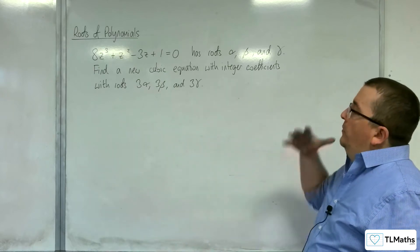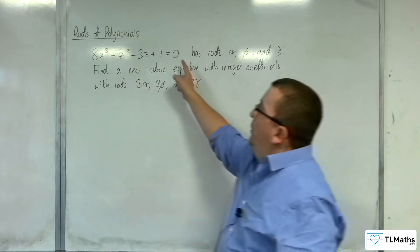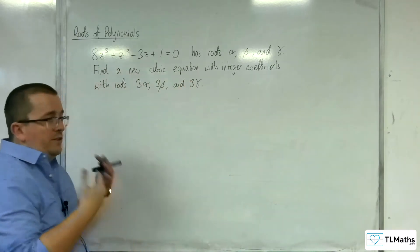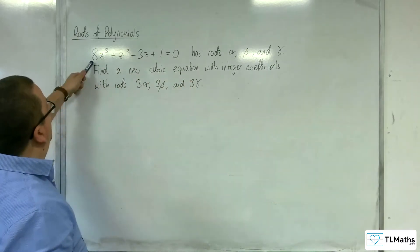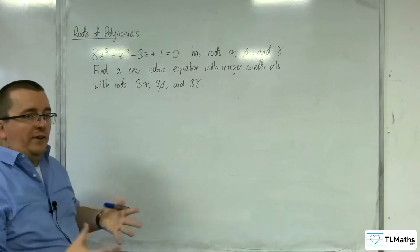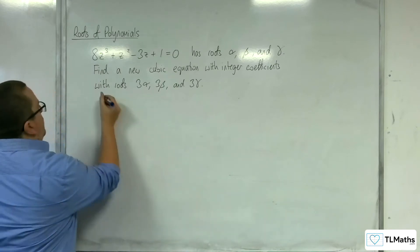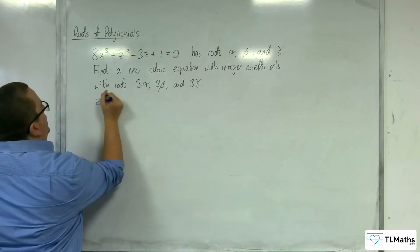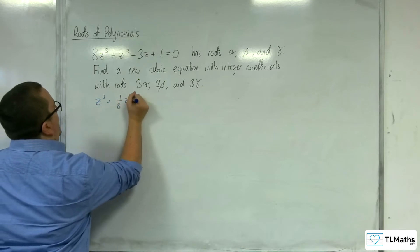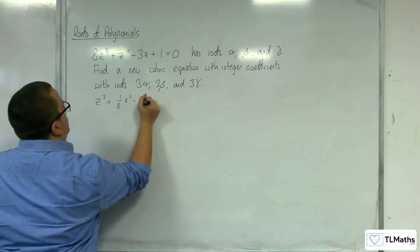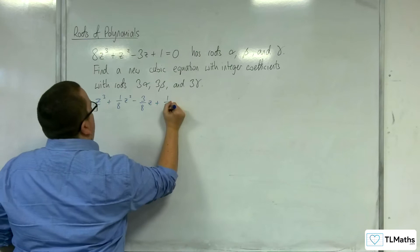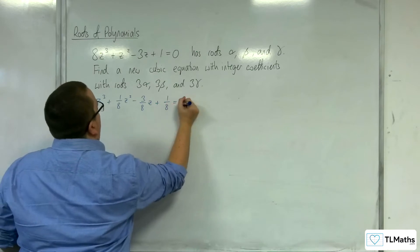The first thing you want to do with your cubic — just like we would have done with a quadratic — is divide it through by the coefficient of z cubed. We want to get 1z cubed. So we're going to have z cubed plus one eighth z squared take away three eighths z plus one eighth equals 0.